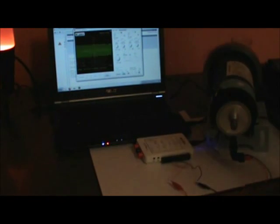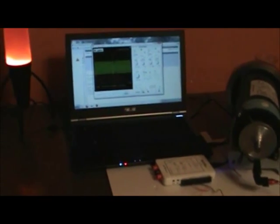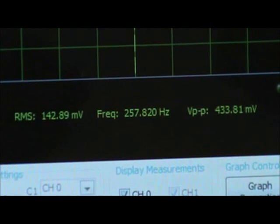And here you can see on the oscilloscope the frequency generated by the variable reluctance sensor. Let's zoom in. You can see the signal, and it's giving a frequency of 258 Hz.